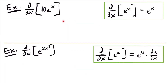Welcome back. Let's start with this example. We want to find the derivative of 10 times e to the power of x. In order to find this derivative, we're going to need to use the derivative rule for the exponential function e to the power of x. And we know that the derivative of that function is itself — the derivative of e to the power of x is e to the power of x.